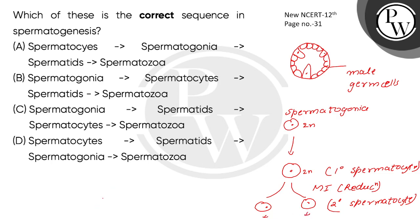After Meiosis 1, the secondary spermatocyte undergoes Meiosis 2. This is an equational division. The secondary spermatocyte goes through Meiosis 2 to produce spermatids.